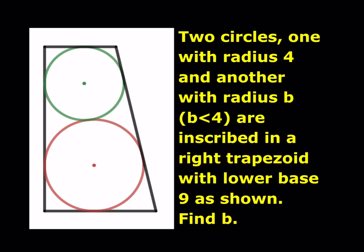We know that radius b is less than 4, so it's the radius of the green circle, and the radius of the red circle is 4. We can start by marking the radii — this is 4 and this is b. Let's connect the centers; that's going to be b and 4. Then we can make another perpendicular, which is also 4. We get a little square there, so this is 4 and this is 4 as well. The lower base of the trapezoid is 9, so this piece is 5.